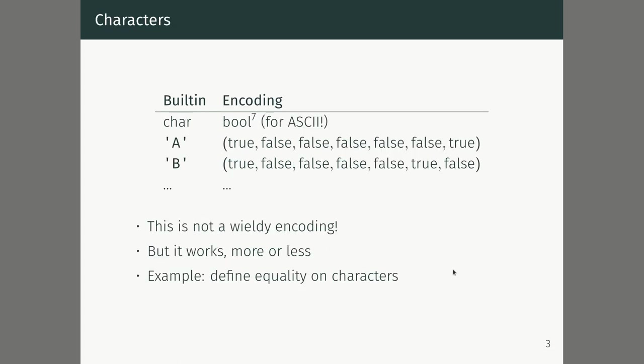Once you have Booleans, you can encode more data types. For characters — say ASCII — we can encode it as a tuple of seven Booleans. For example, the encoding of capital A in ASCII is 1,0,0,0,0,0,1. We can represent that as the tuple (true, false, false, false, false, false, true).